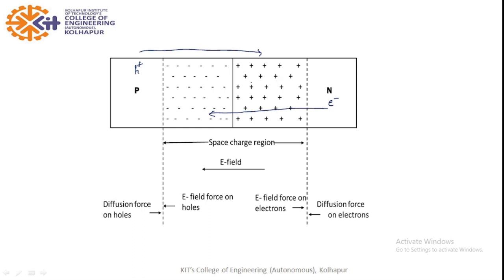When electrons from the n-side and holes from the p-side cross the junction, they combine — there is recombination of electrons and holes. At the junction, on the p-side there is a layer of negative ions, and on the n-side there is a layer of positive ions, as shown in the diagram. In this region there is recombination of electrons and holes, so we call it the free charge region. This total region we call the space charge region.